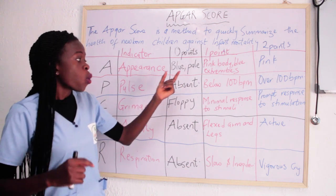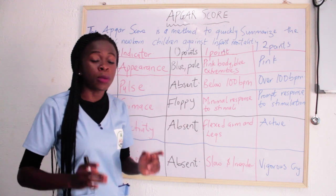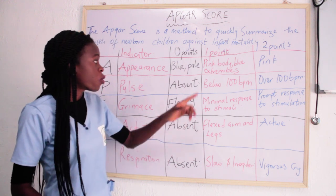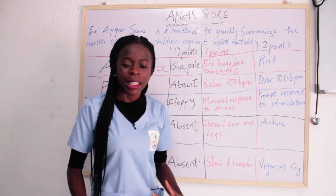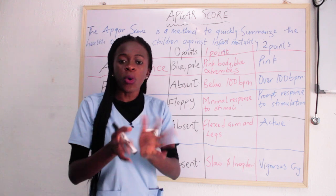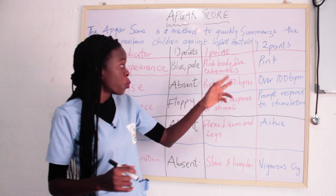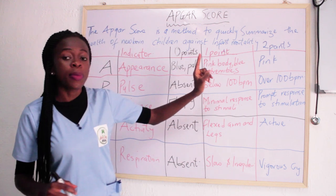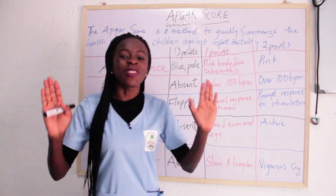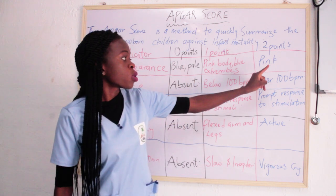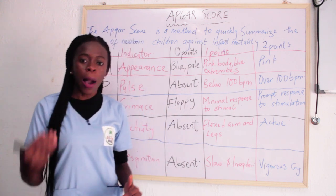To recap: for Appearance — when the baby is totally blue and pale, you give zero. When the baby has a pink body but blue extremities (hands and legs are blue), you give the baby one point. But if the baby is looking very fresh and pink all over, you give the baby two points. That is the A in Apgar.